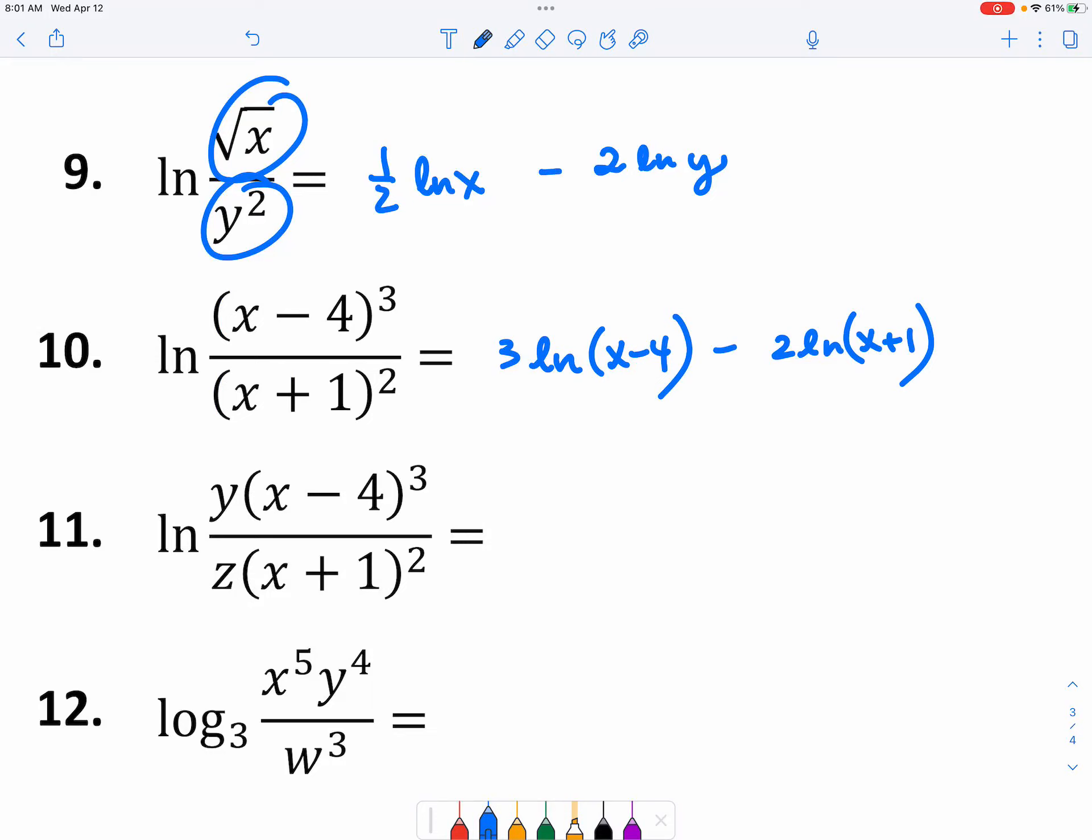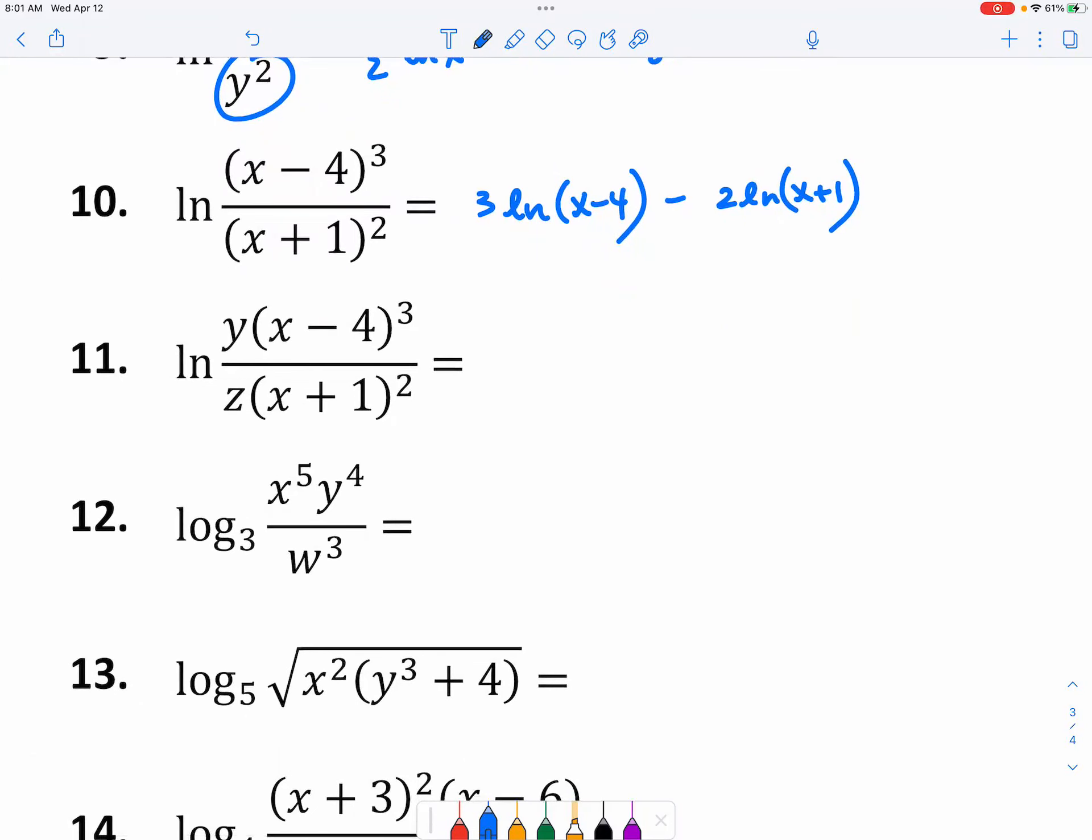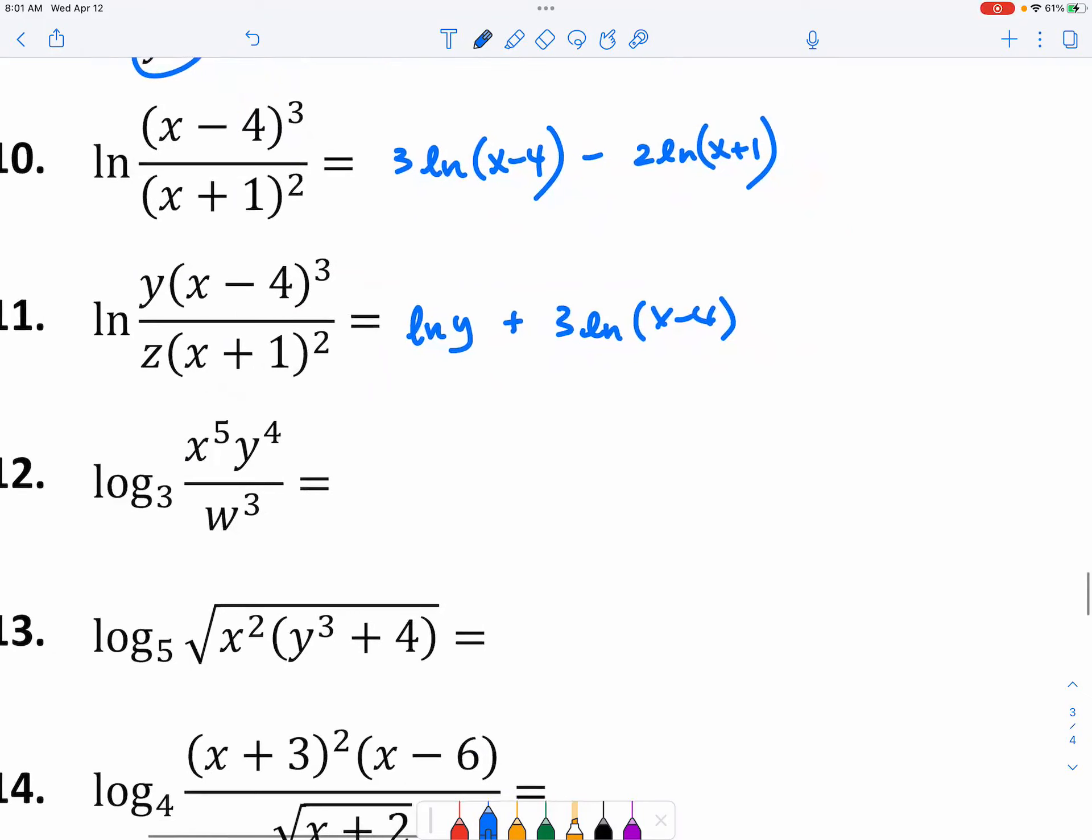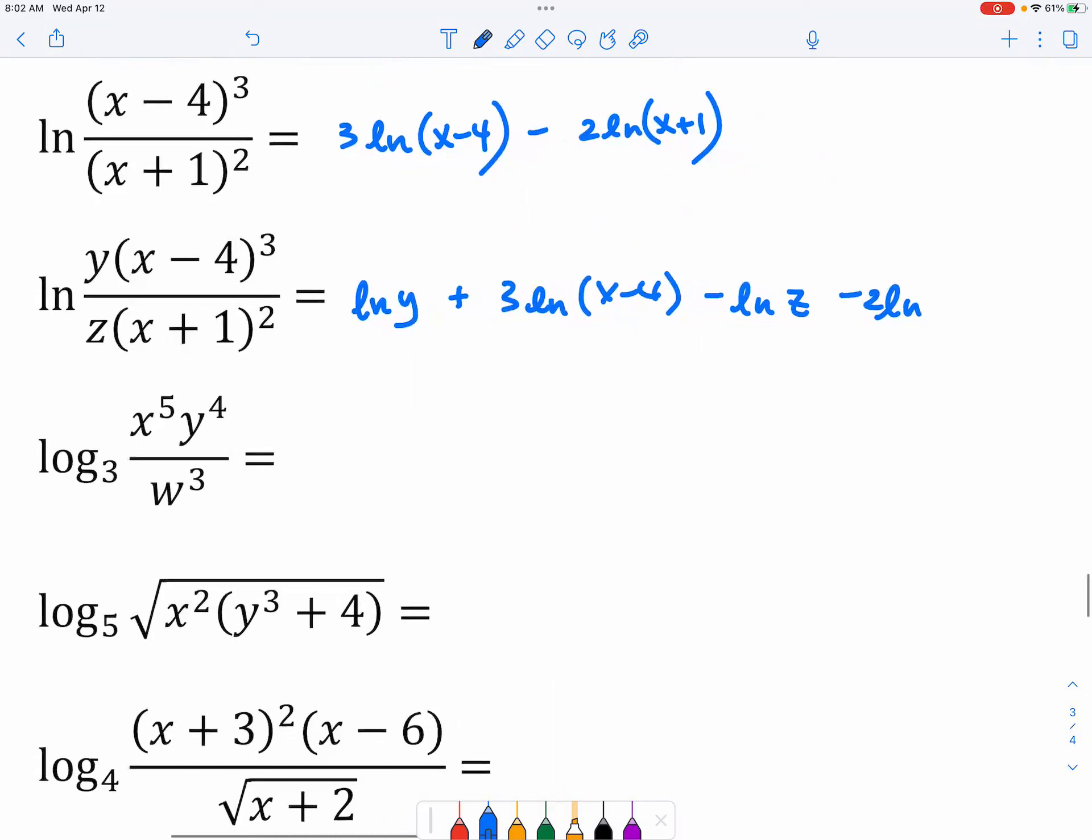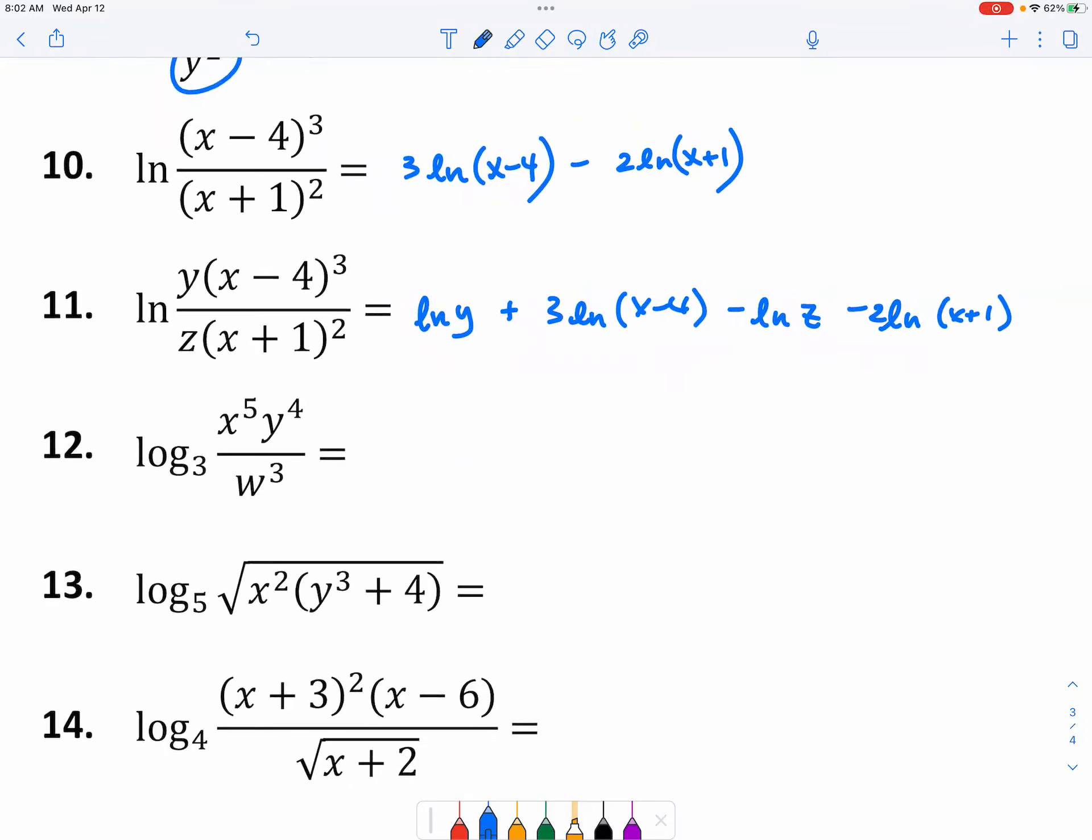If it's just a single letter, a single term, yes, you don't have to put parentheses. But if you have something adding or subtracting with each other, then you must put a pair of parentheses. Number 11. There are a total of four things right here. So to break it down, we have ln(y) + 3 ln(x - 4) - ln(z) - 2 ln(x + 1). It's more of a vision. If you can see how it's broken down, it's such an easy task.